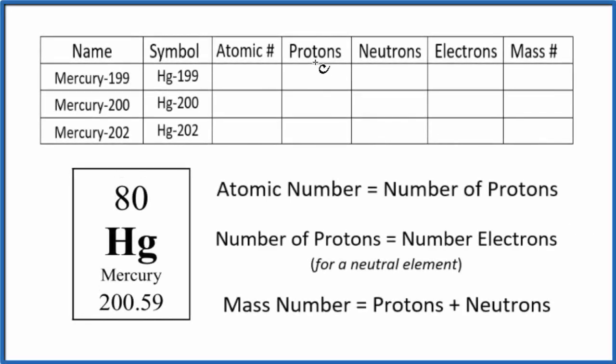In this video we'll find the protons, neutrons, electrons, and the mass number for mercury isotopes. There are seven isotopes of mercury, but we're going to look at the three most common isotopes of mercury. So let's start out.